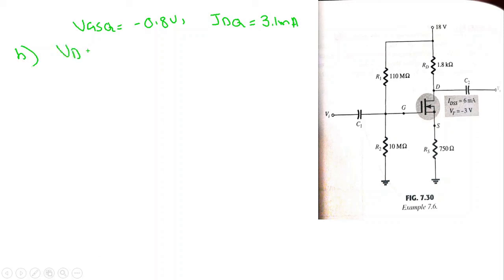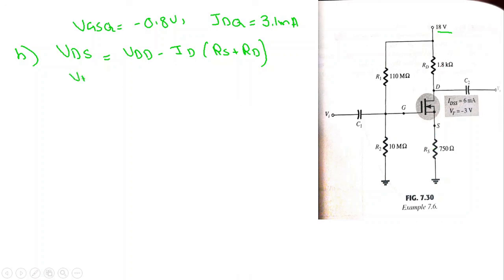For the second part, we find VDS using: VDS = VDD − ID×(RS + RD). Substituting VDD = 18V, ID = 3.1 mA, RD = 1.8 kΩ, and RS = 750Ω gives VDS = 10.1V.